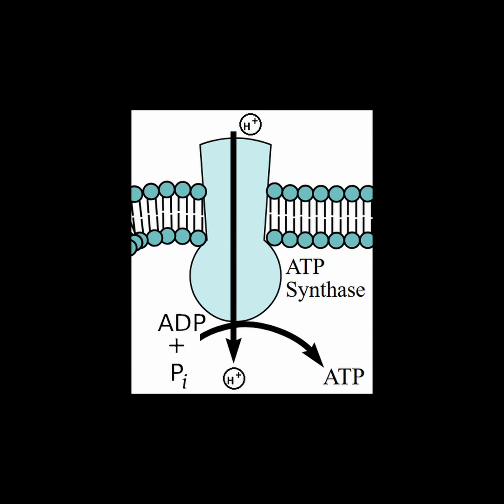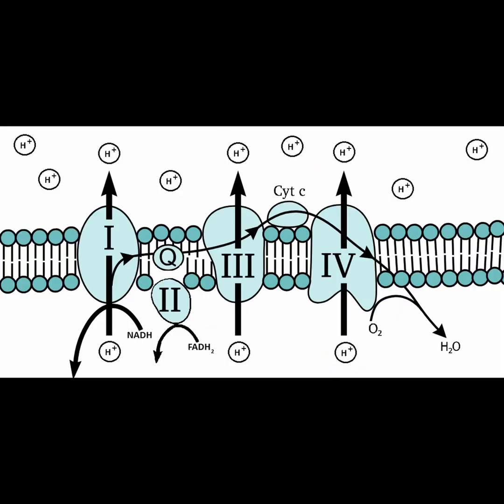The second part of the process is called oxidative phosphorylation, which uses the proton gradient to power a protein complex called ATP synthase that manufactures the ATP molecules.